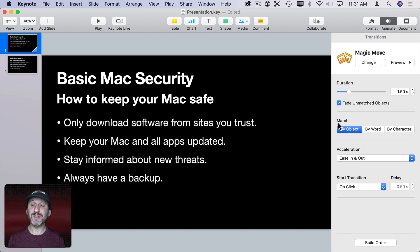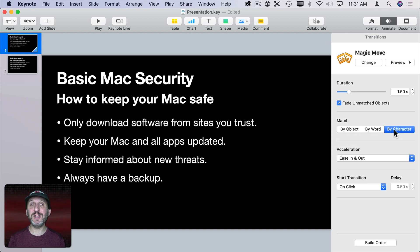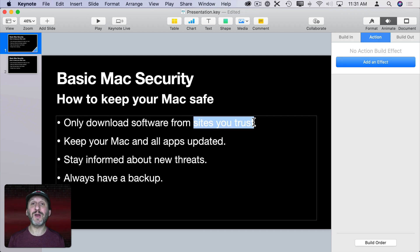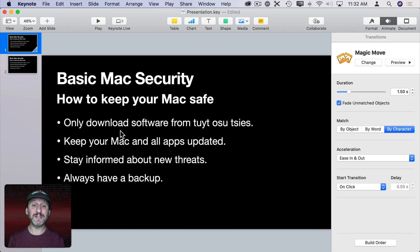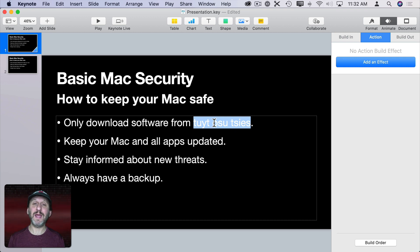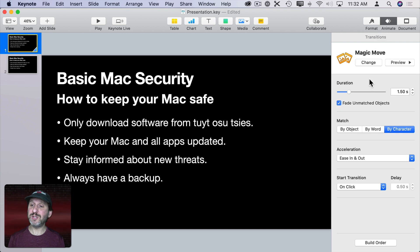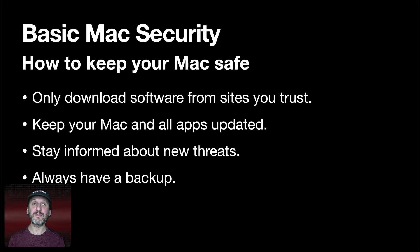Magic Move also has a Match setting: By Object, By Word, or By Character. If you change it to By Character, it tries to animate text by moving individual characters. You can take the highlighted words and scramble the letters on one slide, then on the next slide the correct words appear — Magic Move with By Character turned on will animate the letters unscrambling to reveal the correct words. It draws attention momentarily rather than maintaining persistent emphasis.